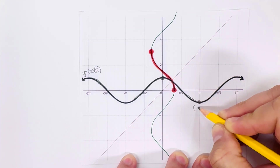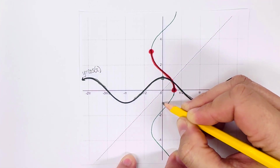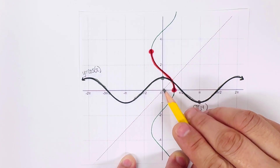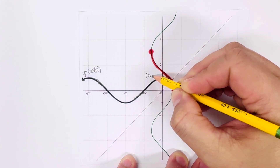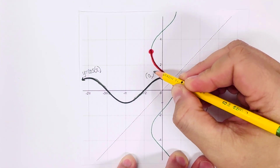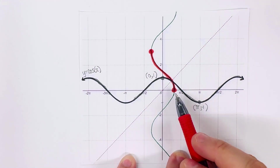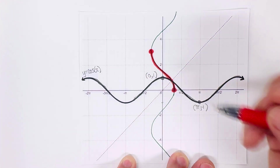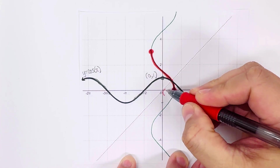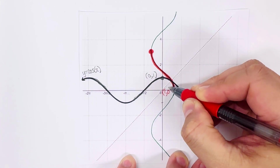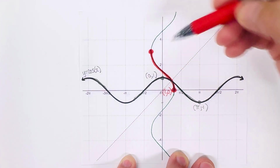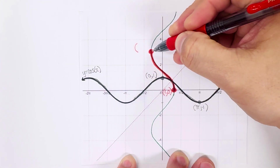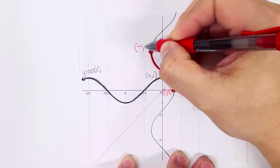For this point, we get x equals pi and y equals negative one. And this other dot is at x equals zero and y equals one. Since the red dot is the inverse, we just flip the coordinates. So negative one maps to pi, and one maps to zero. When we say inverse, we just flip the x and y values, giving us the coordinate negative one, pi.